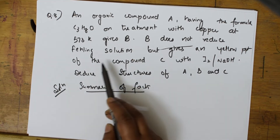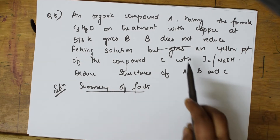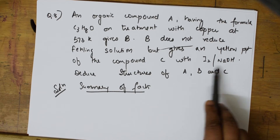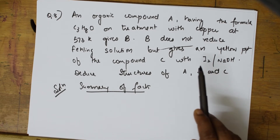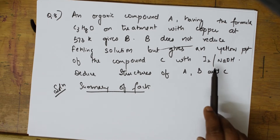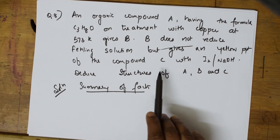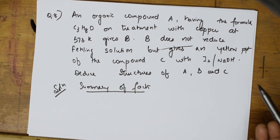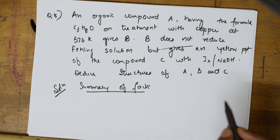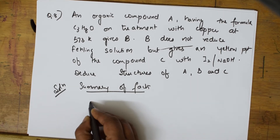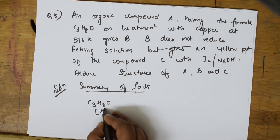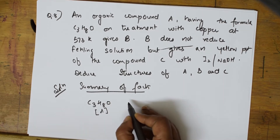Compound B does not reduce Fehling's solution, but gives a yellow precipitate of compound C with I2 and NaOH — that is the iodoform reaction. Only methyl ketones show the iodoform reaction. Compound C is an iodoform precipitate. Deduce the structures of A, B, and C.